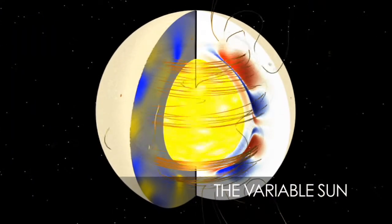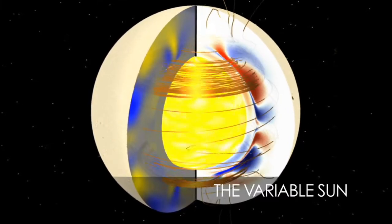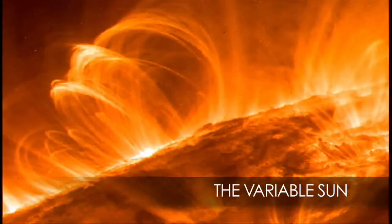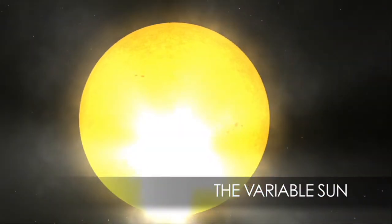But what causes the Sun to vary so much? A closer look at its structure may reveal the answer. Studying the magnetic field and surface activity such as sunspots, solar flares, and coronal mass ejections may provide vital clues.